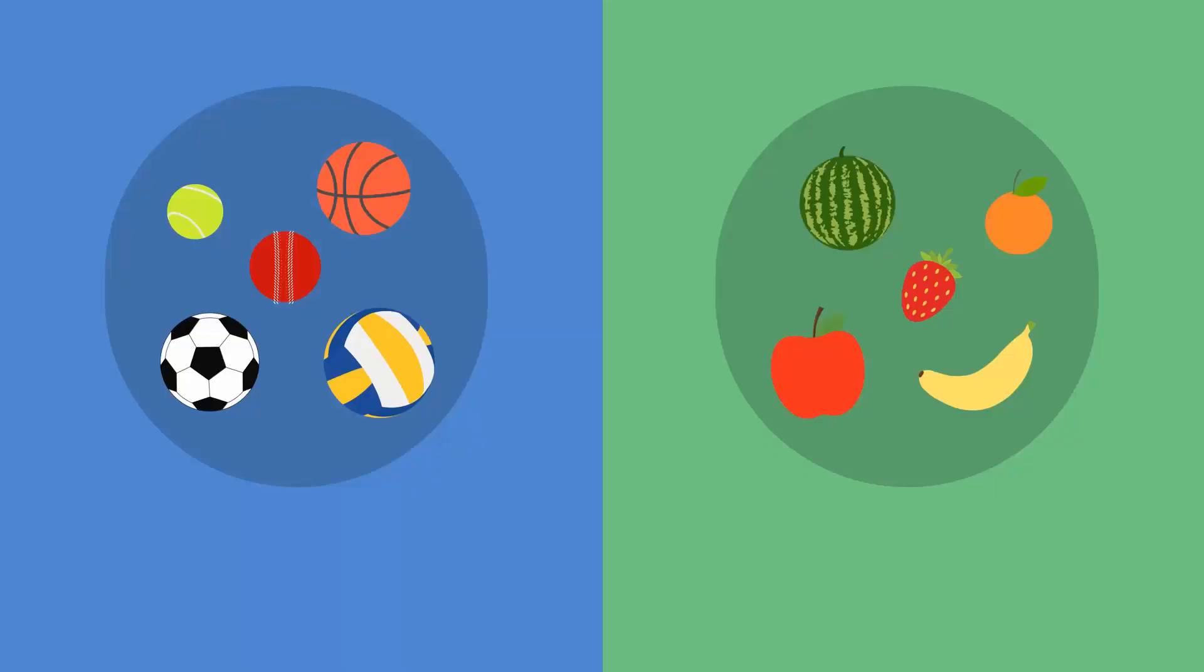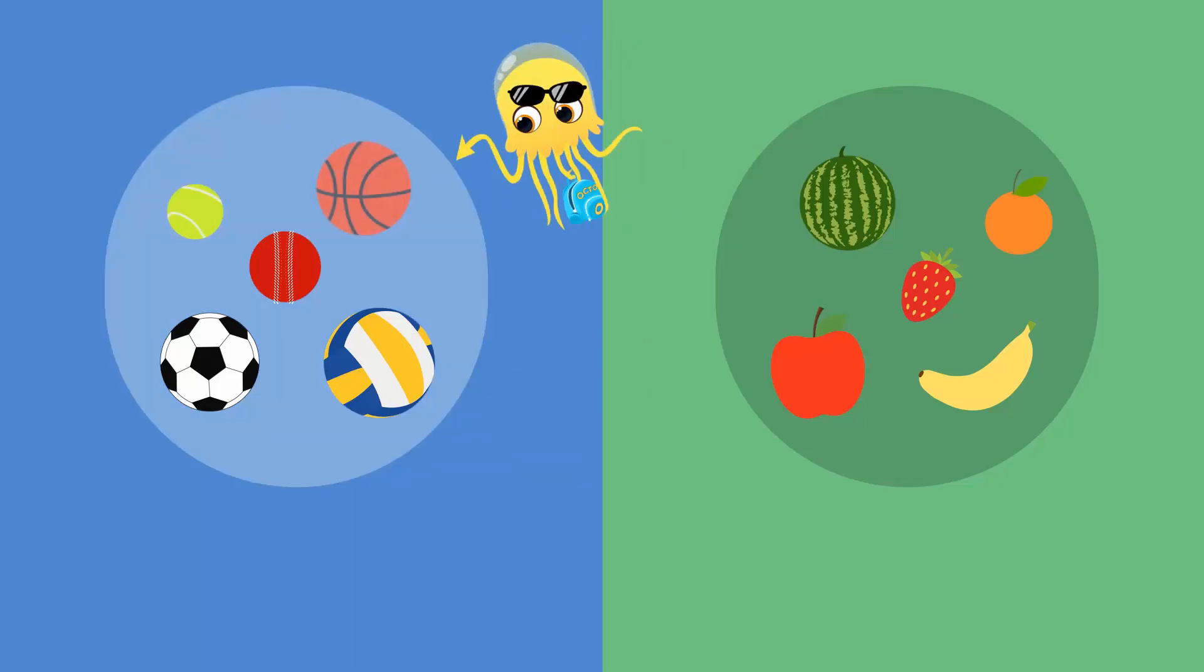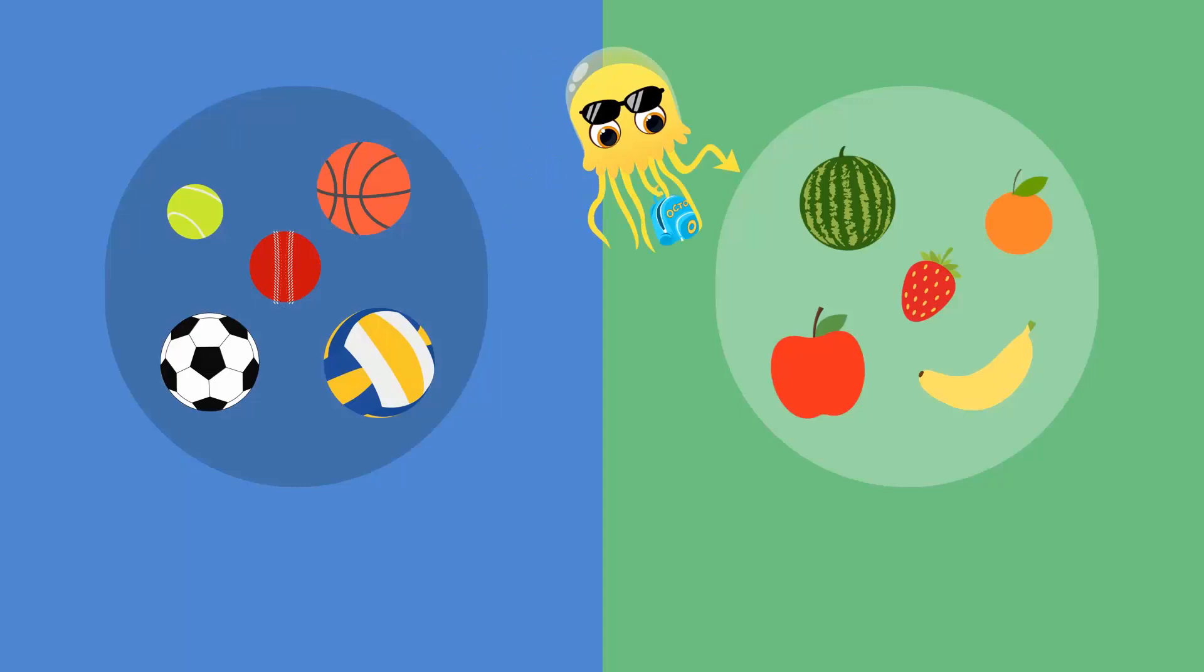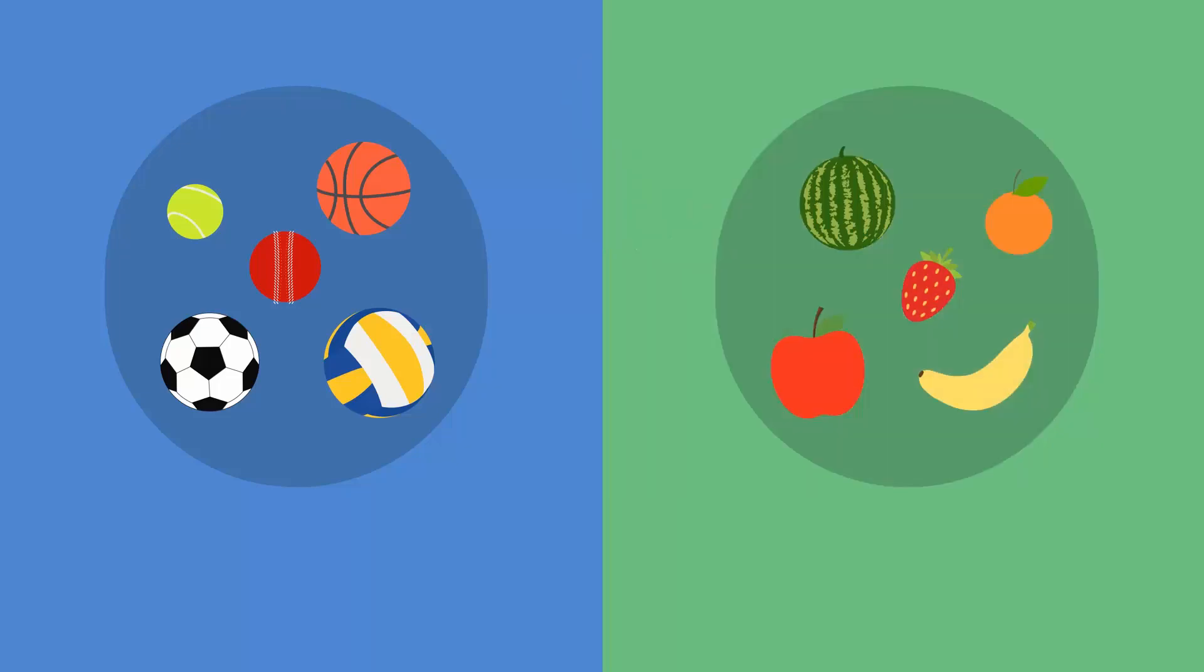Consider these two groups of items. On the left, we have a group of balls containing the tennis ball, basketball, cricket ball, football, and volleyball. On the right, we have a group of fruits: the watermelon, orange, apple, strawberry, and banana. Observe that these objects have been placed nicely into their respective groups. Mathematically, these groups are called sets.